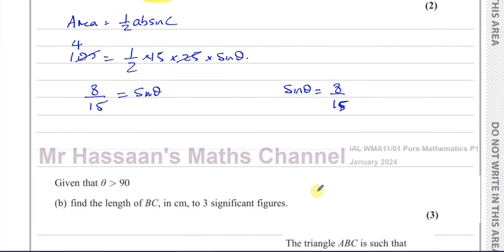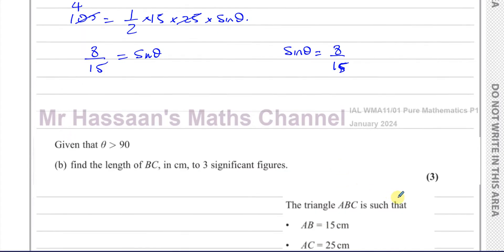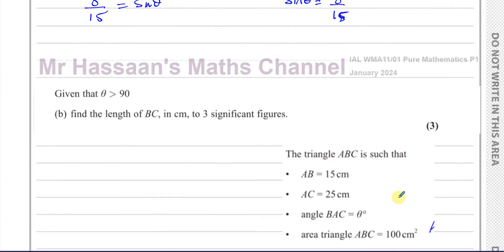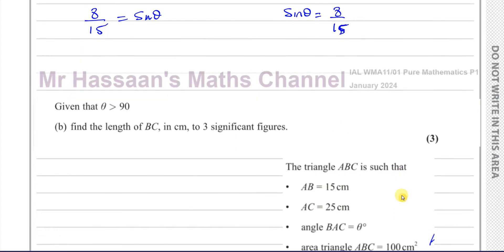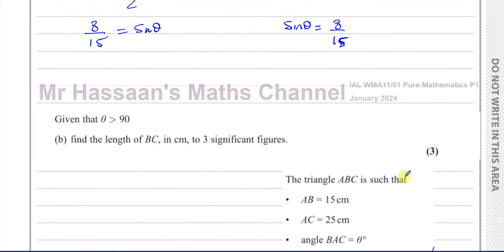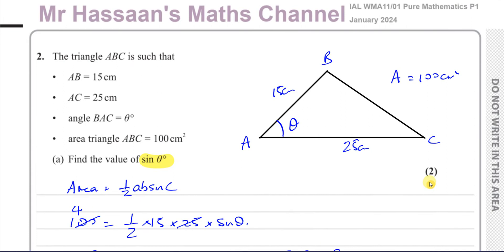For part (b), it says: given that theta is greater than 90°, find the length of BC in centimetres correct to three significant figures. So now with this additional information, we realise the way I originally drew the triangle may not be correct, because theta is greater than 90°.